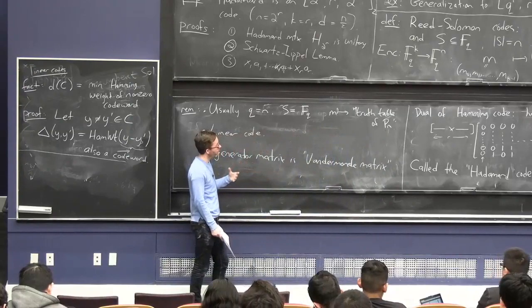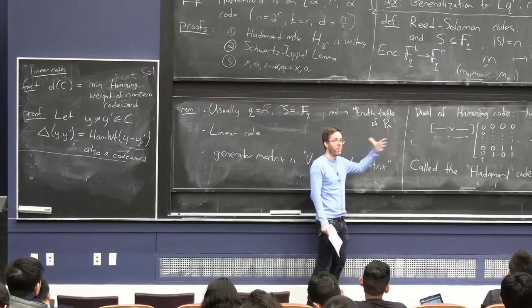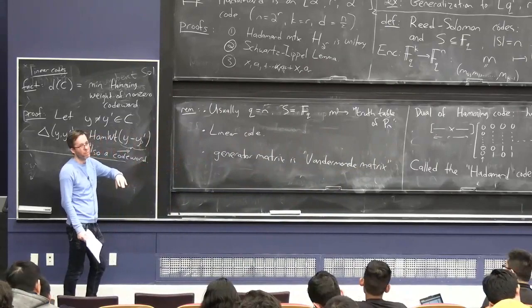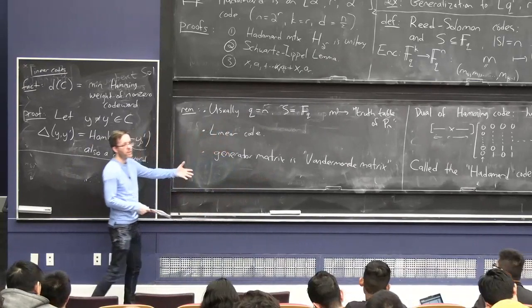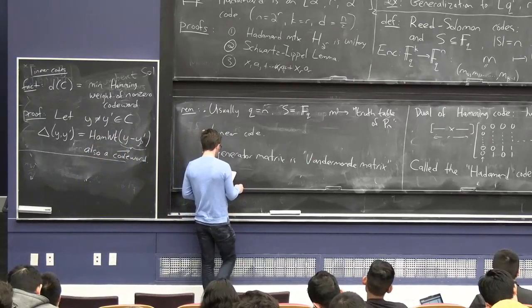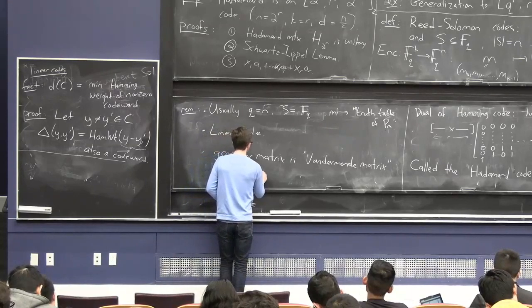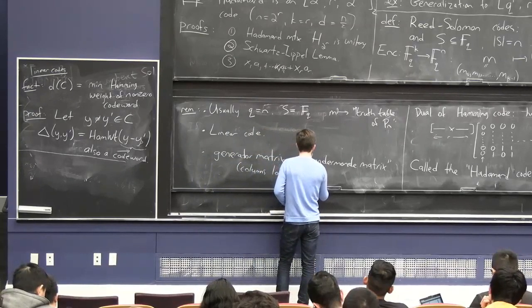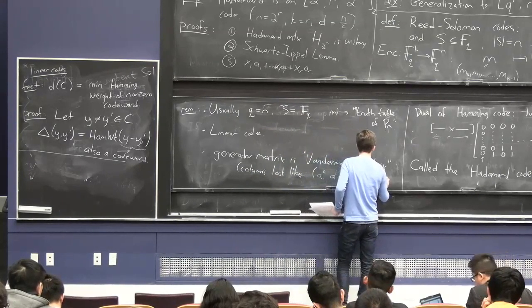But this is another way to see it. The generator matrix is a Vandermonde matrix, which means that the columns of it look like a to the power of 0, a to the power of 1, up through a to the power of k minus 1, for all a in your set s.